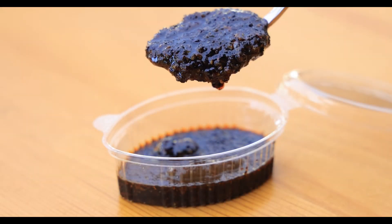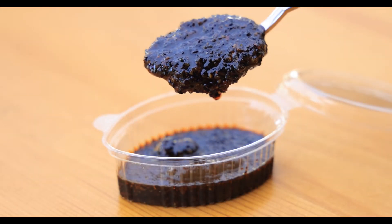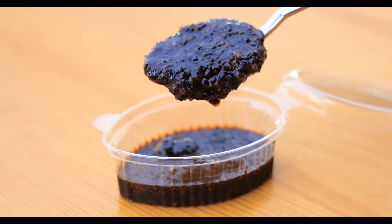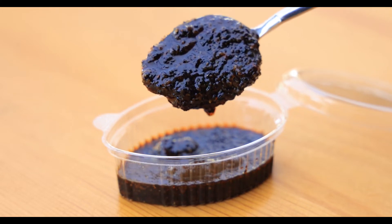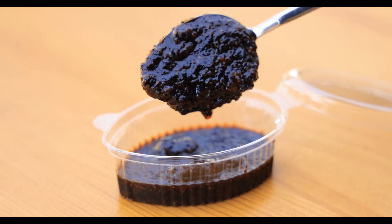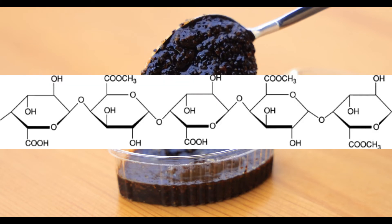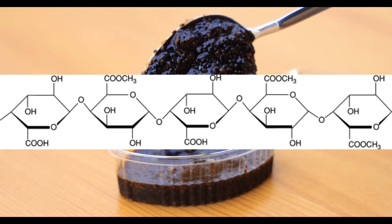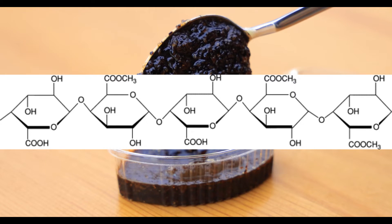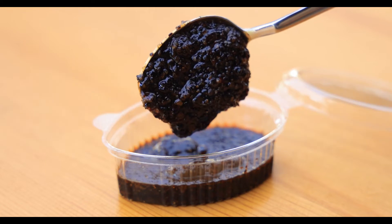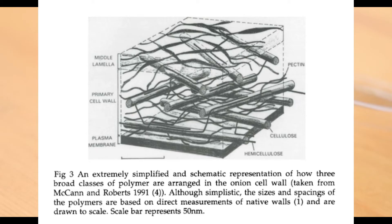Unlike most human cells, plant cells that we get pectin from do not have cholesterol and other lipids, at least not the same way living animals do. Instead, they use sugars, and pectin is one of these sugars. Broadly speaking, the cell wall uses pectin to create rigid and stabilised areas.